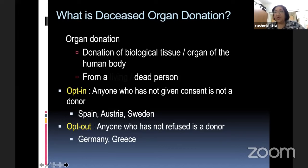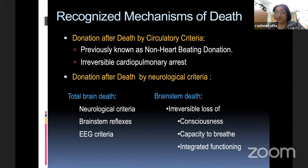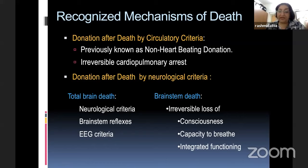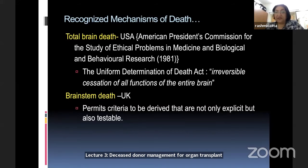The recognized mechanisms of death are donation after death by circulatory criteria (non-beating heart donation), but I'll be talking about donation after death by neurological criteria, where the patient's heart is beating but total brain stem death or total brain death is declared. In India, we follow only the brain stem type of death. We do not follow total brain death, which is normally followed in the USA. Because we follow brain stem death, the criteria are testable and documentable. Therefore, EEG does not figure very prominently in our testing for brain death.